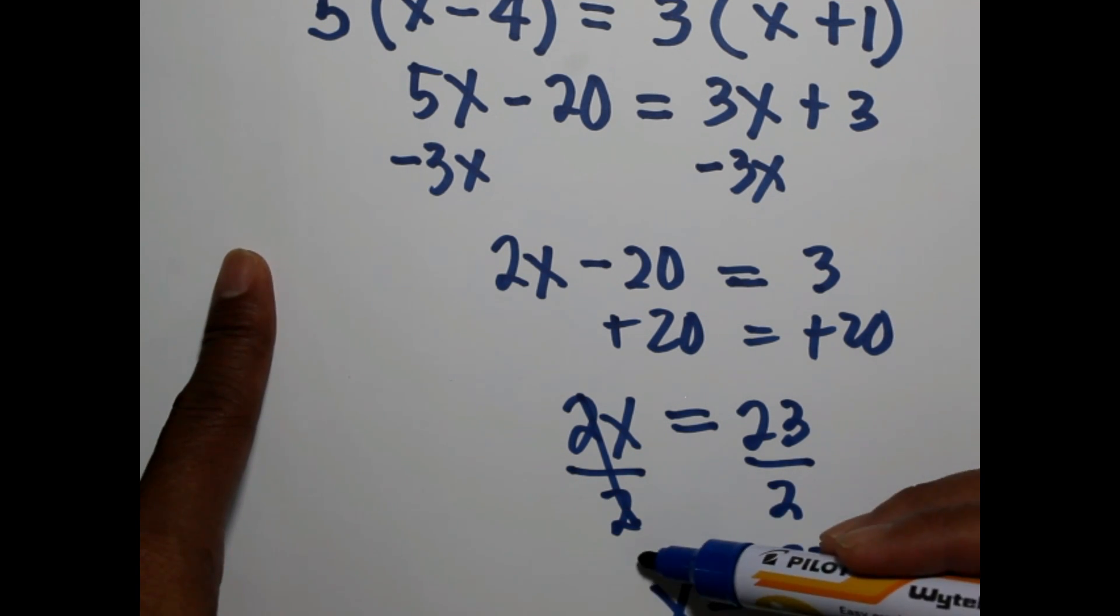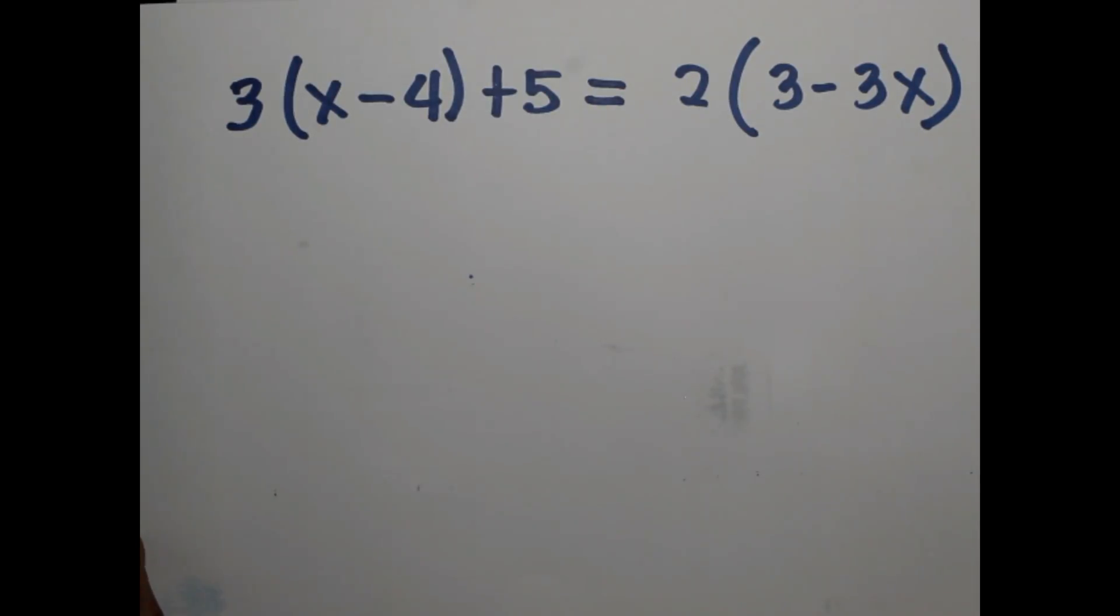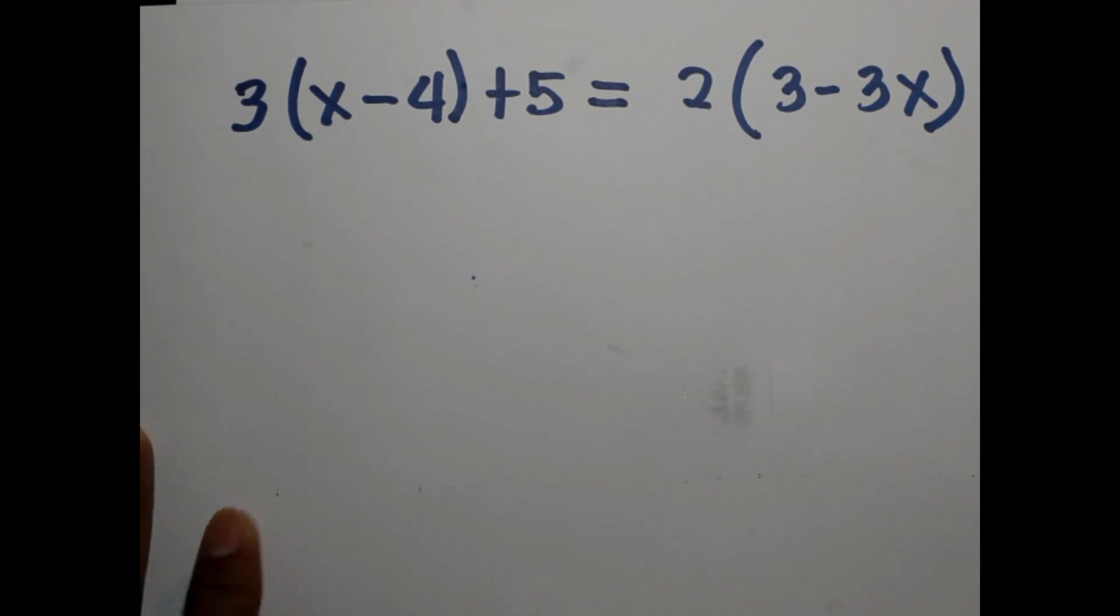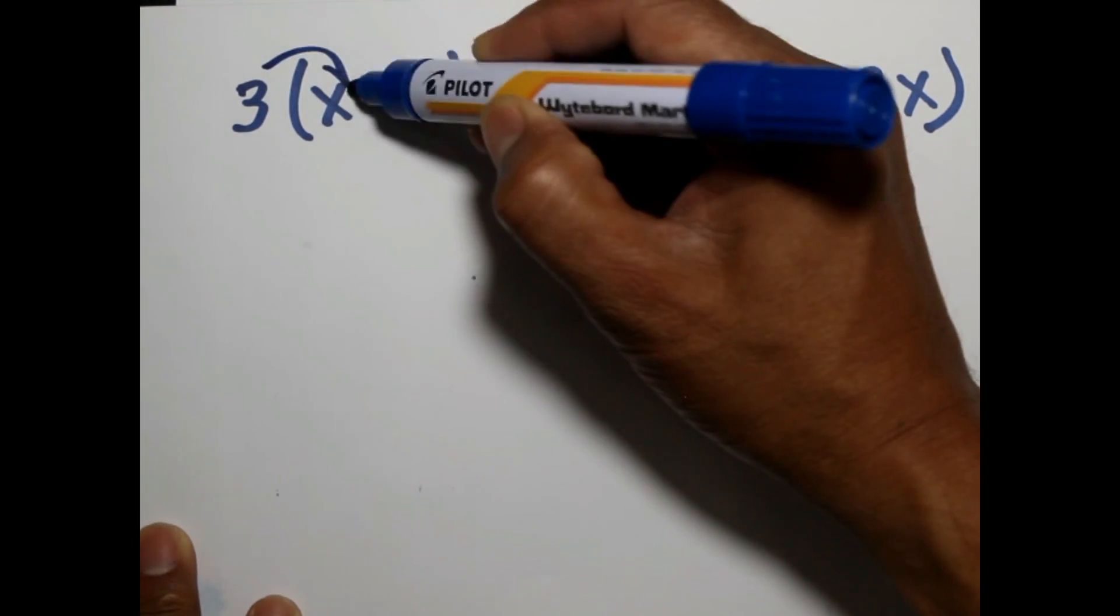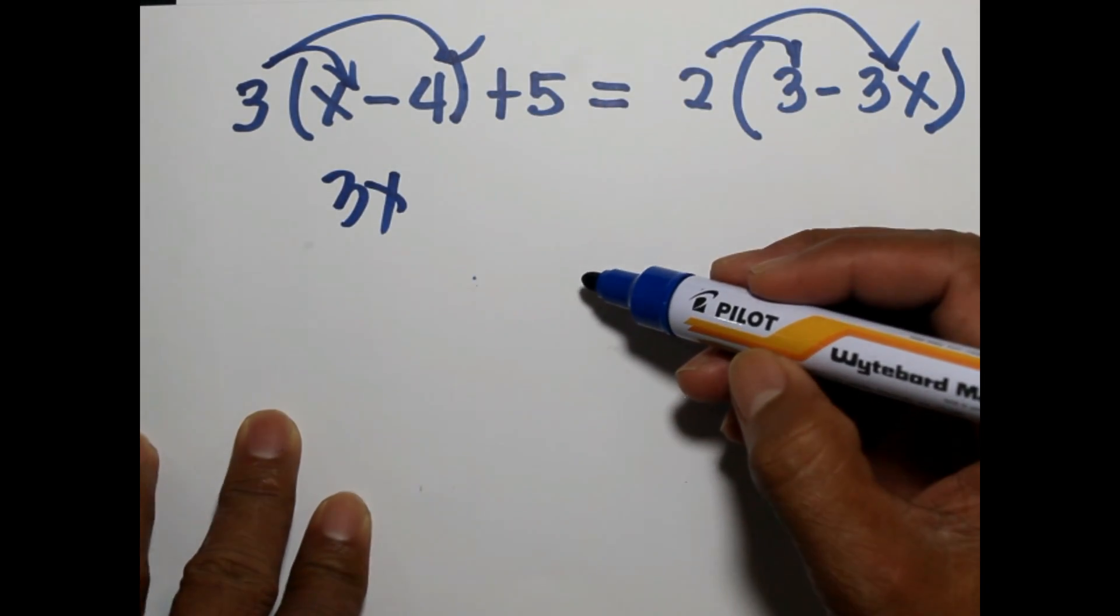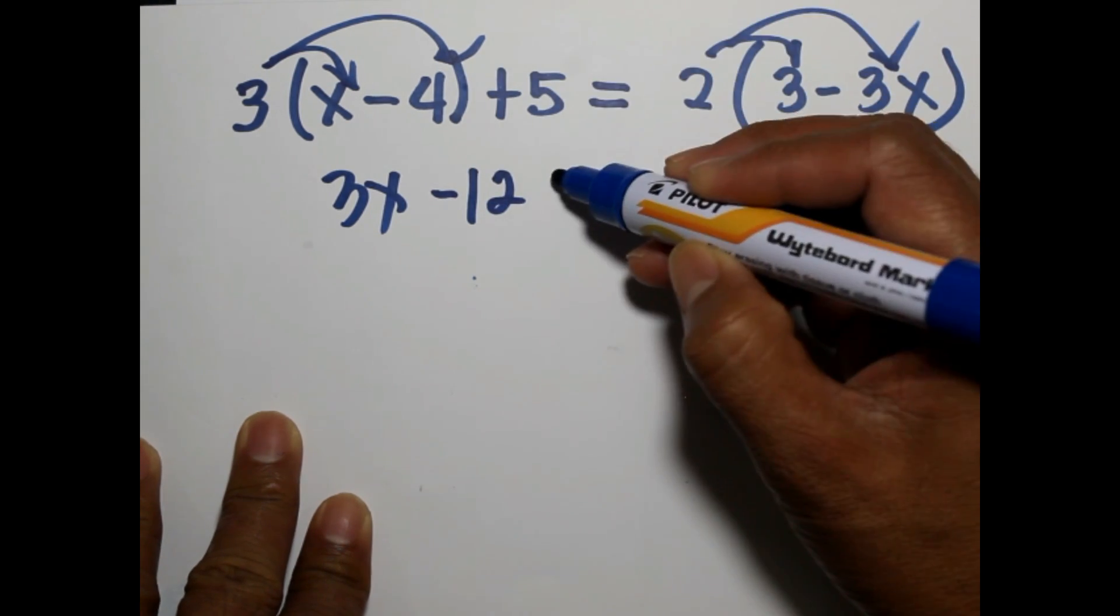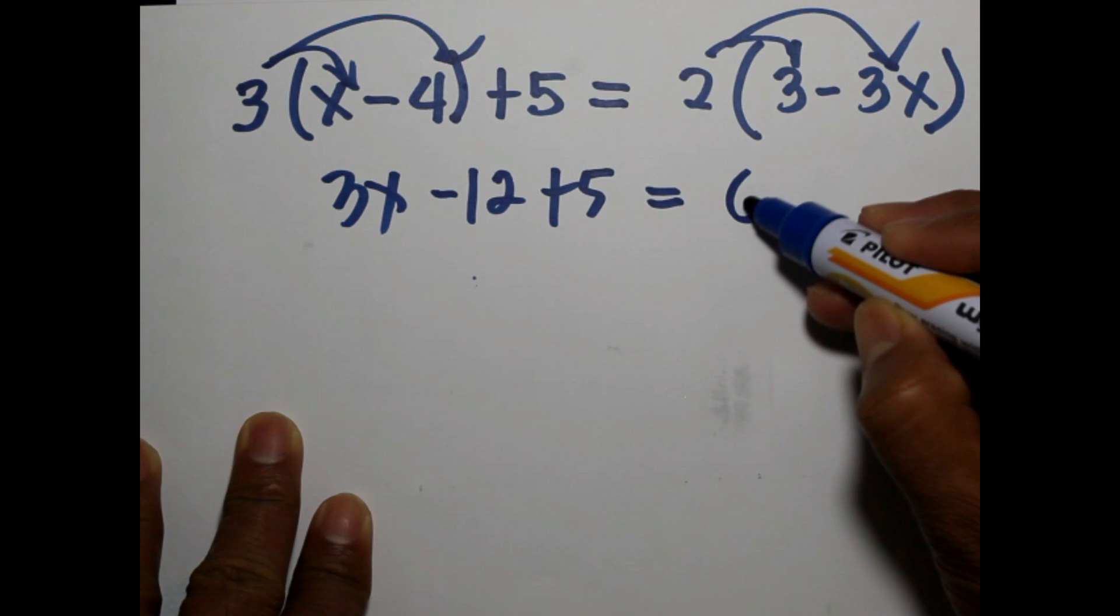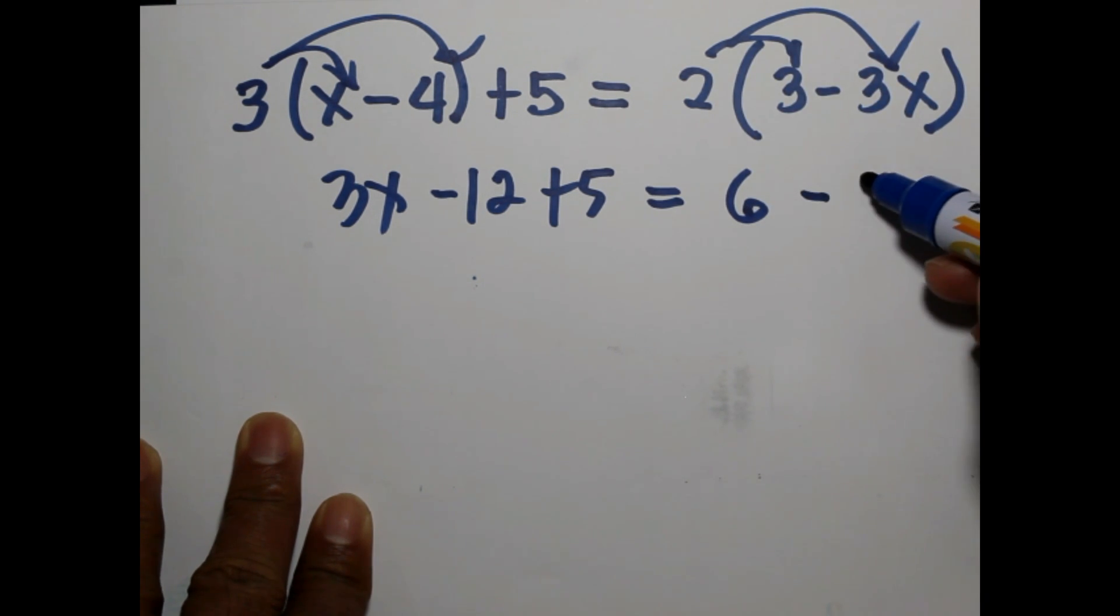Another example: 3 multiplied to the difference between a number and 4 plus 5 is equal to 2 multiplied to the difference between 3 and 3 times a number. We will apply the distributive property. We will distribute, so 3 times x, that's 3x, 3 times negative 4, negative 12, plus 5 equals 2 times 3, that's 6, 2 times negative 3x, that's negative 6x.